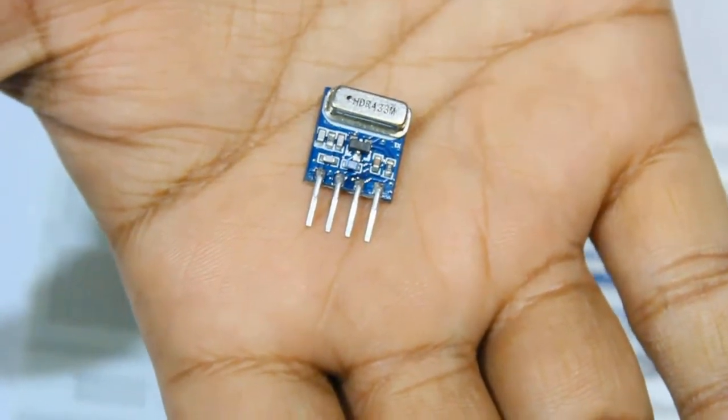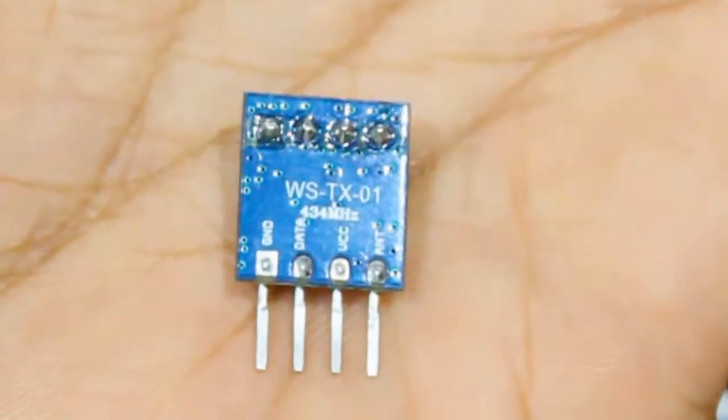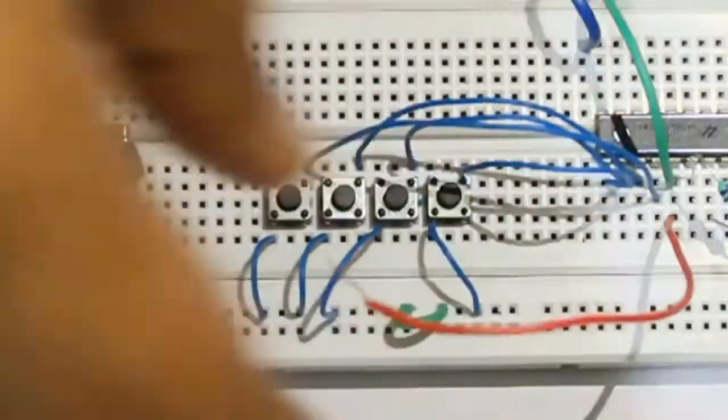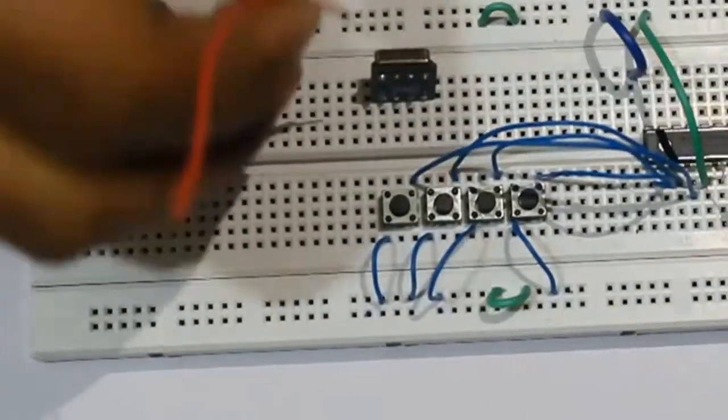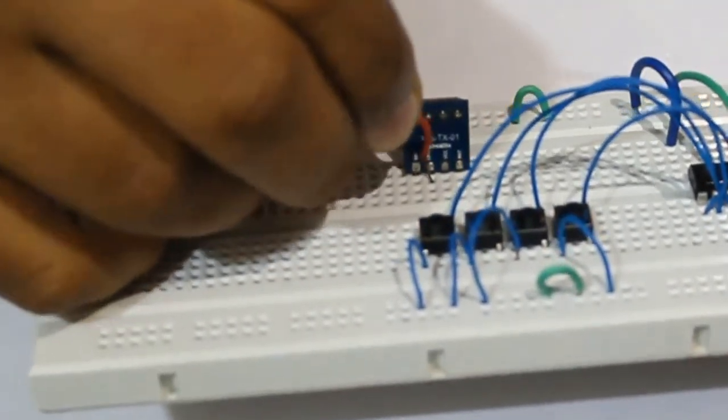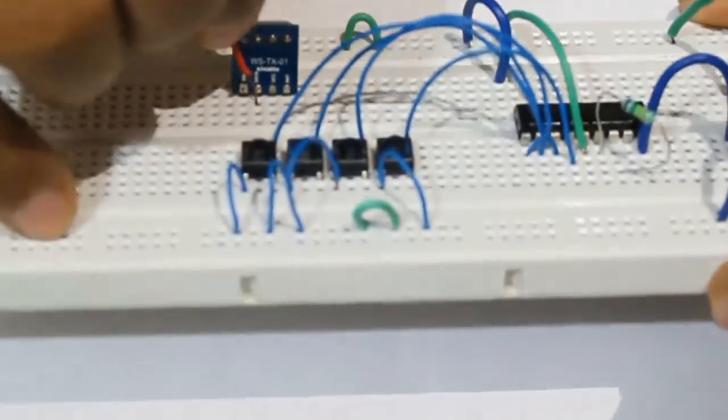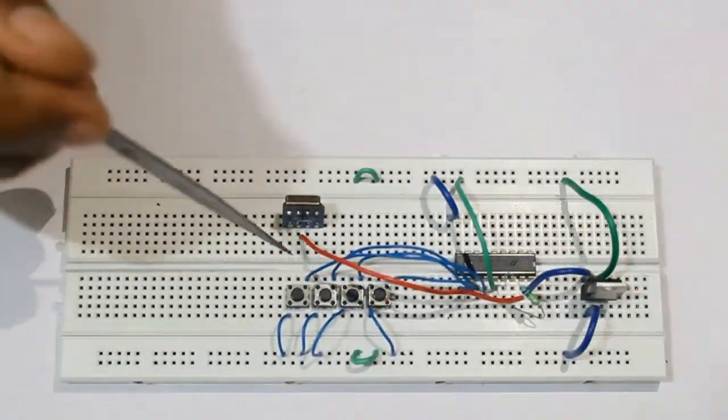This is how our transmitter looks like. There is a crystal on that. At the back you can see four pins: ground, data, VCC, antenna. Now I will be placing it on breadboard. The red wire which you can see here is my data out. I will be connecting it to the data of my transmitter. Now I have connected this wire.